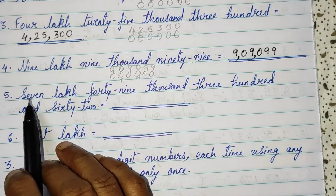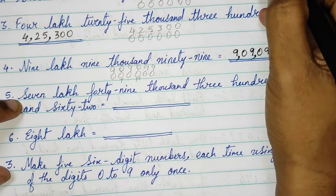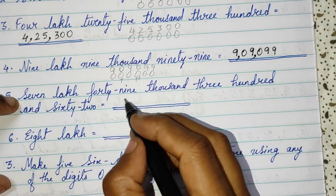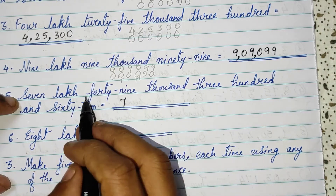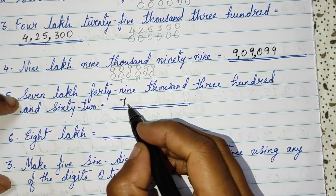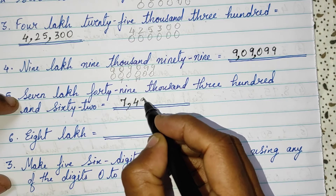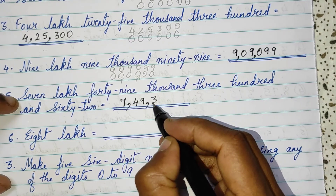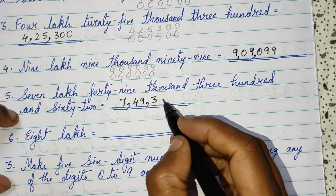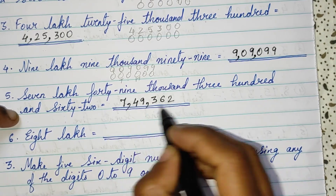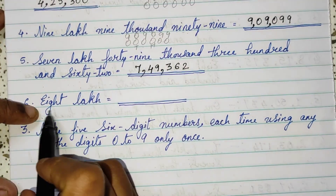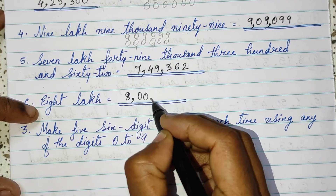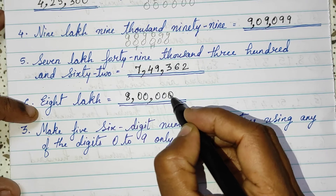7,00 — I hope you have understood. I will write directly: 7,00, 49,000, 49,300, 362. So I have all the digits. 8,00 — there is no number further, so put 0s.